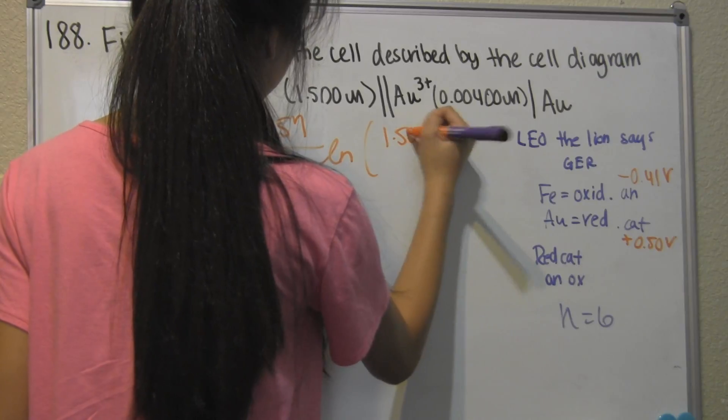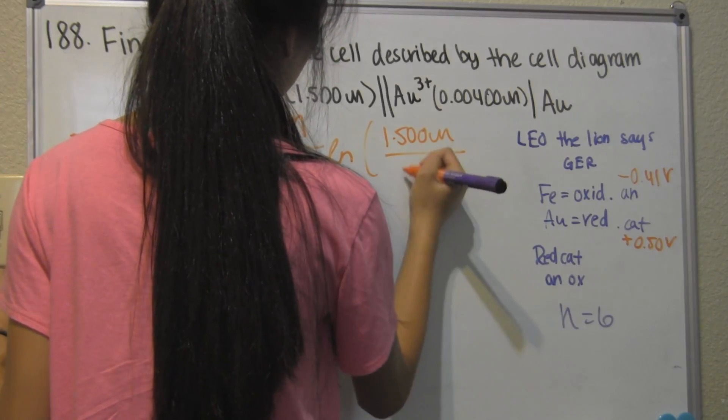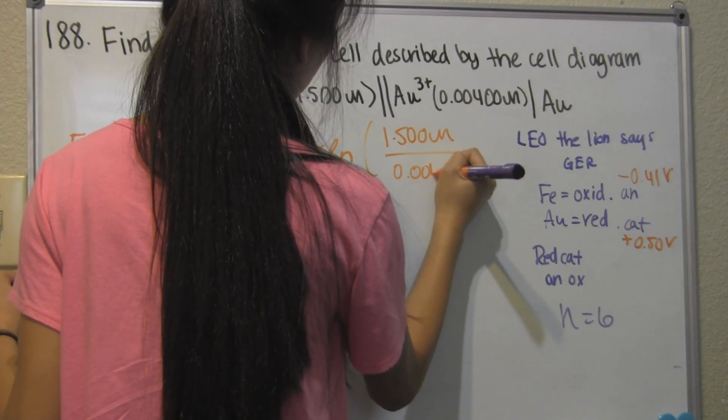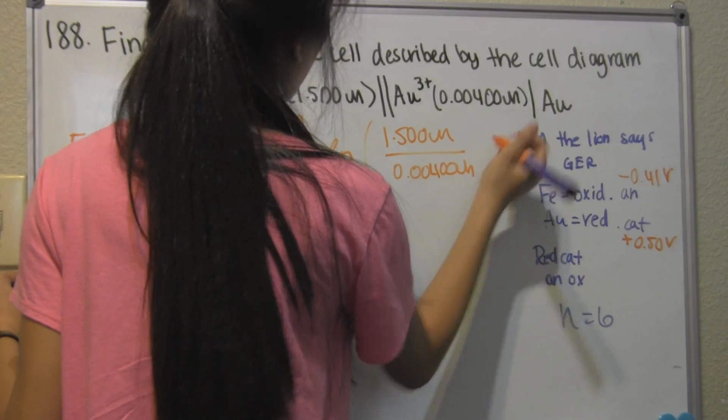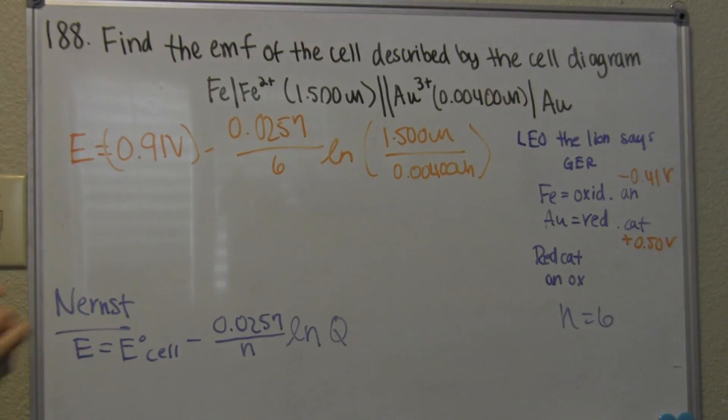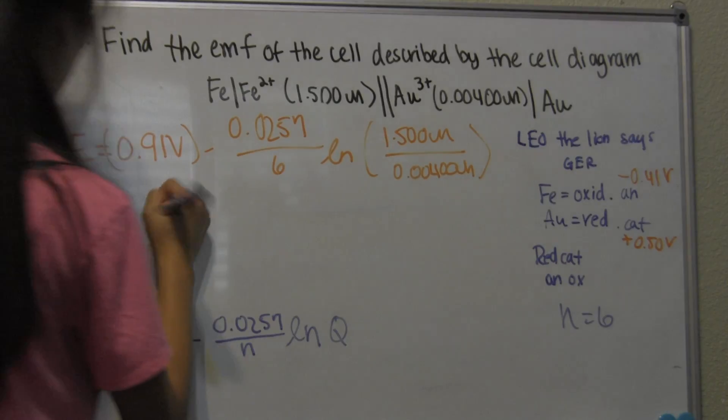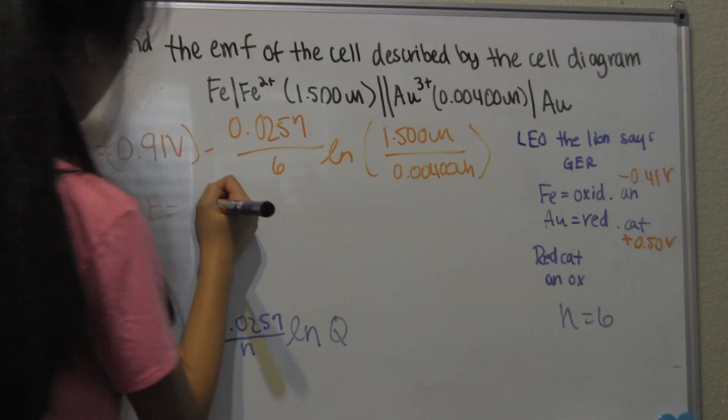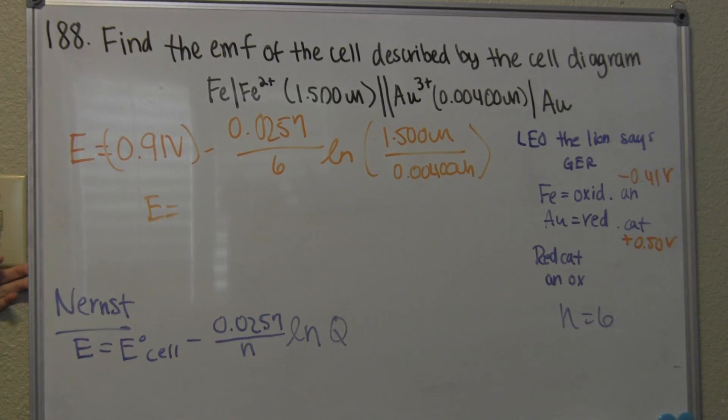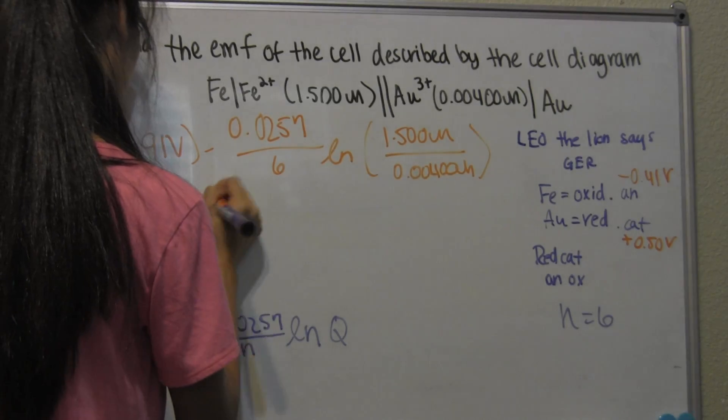over 0.00400 M of the gold. The answer you should get is E equals 1.89.